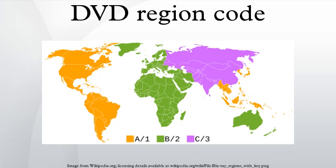NTSC is the analog TV format historically associated with the United States, Canada, Japan, South Korea, India, Mexico, Philippines, Taiwan, and other countries. PAL is the analog color TV format historically associated with most of Europe, most of Africa, China, India, Australia, New Zealand, Israel, North Korea, and other countries.